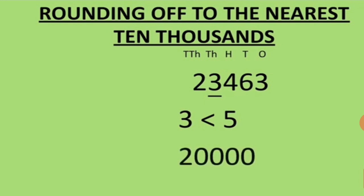So 2 will remain 2, and 3, 4, 6, and 3 will all become 0. So we got 20,000 as our answer. This is how we round off at the ten-thousands place.